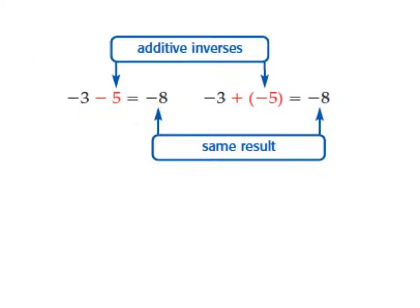A couple more examples here. We have negative 3 minus 5 is equal to negative 8. But if we are having difficulty doing it this way, we can use the additive inverse. Once again, additive inverse means that we're going to change the subtraction sign into addition, and our positive 5 becomes a negative, and the result will be the same.